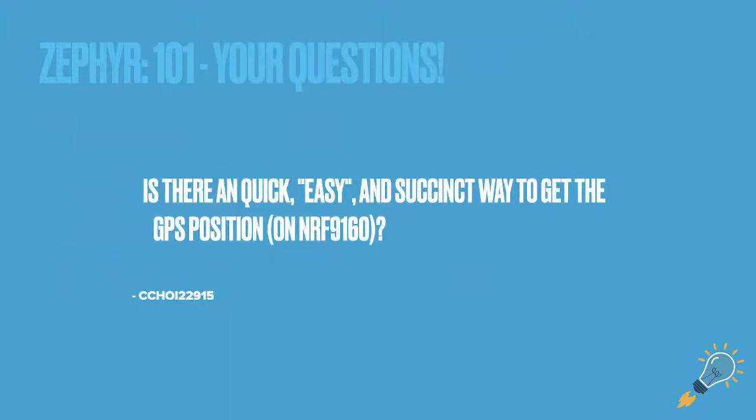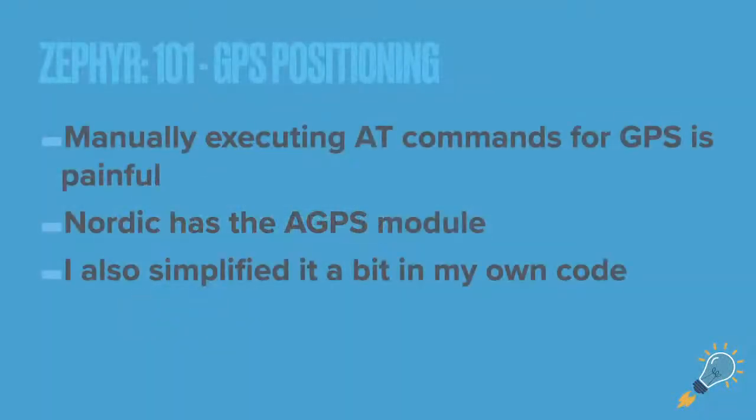So next question, again by the same community member, ctroy202915. Is there a quick, easy, succinct way to get the GPS position? And he essentially was trying to, the GPS library or GPS commands are hairy. GPS library, a little less hairy. It's like, is there an easy way to just like turn on GPS, give me position? So I will show what there is.